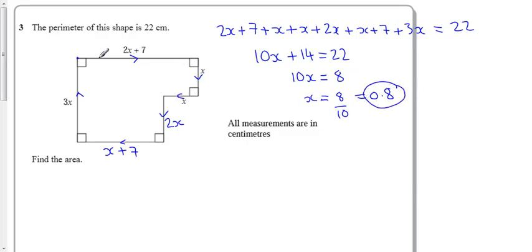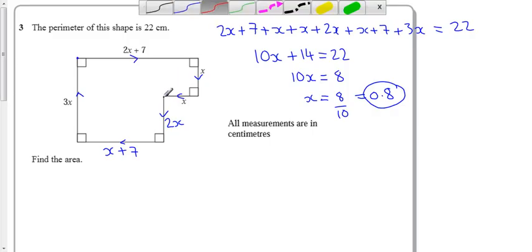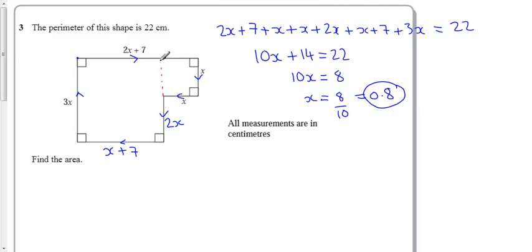Okay, so we now know what x is, and that's going to help us find the area. If I divide this into two shapes, I'll call this rectangle A and this one B.